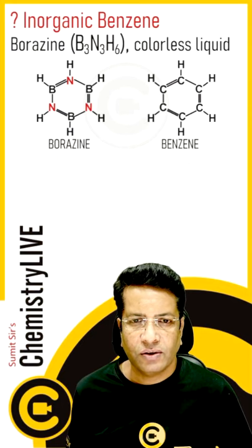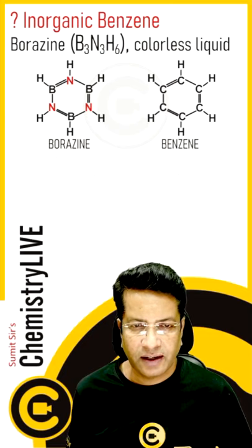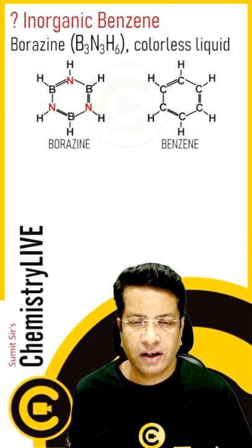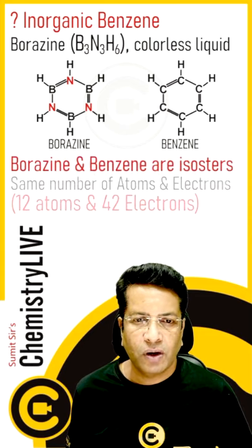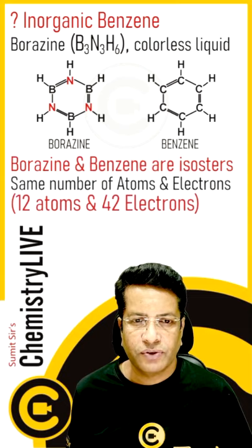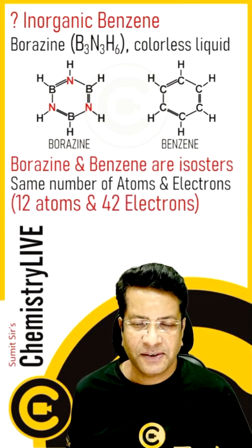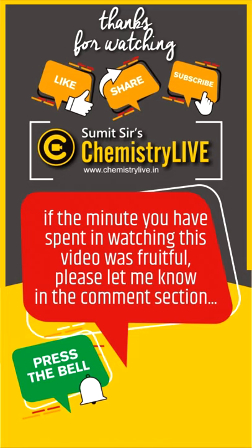...N3H6, is called inorganic benzene. It is a colorless liquid and its structure is exactly like benzene, as you can see in the diagram. Borazine and benzene are isosters. Isosters are those molecules which have the same number of atoms and the same number of electrons. Thank you so much — please like, share, and subscribe, and press the bell icon for new video notifications.